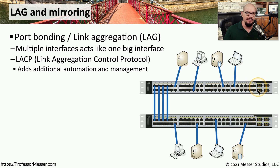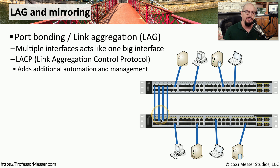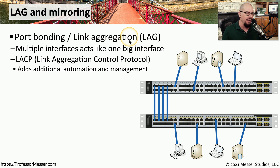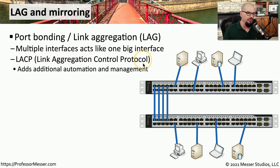Having a single link to connect switches is useful for connectivity, but occasionally you may need additional bandwidth between switches. There is a standard that allows you to put multiple connections between switches and use all of those connections as one large aggregated link. This is called port bonding or link aggregation — sometimes referred to as LAG. These multiple interfaces will act and look like one big interface to the switch, and often a control protocol called LACP, or Link Aggregation Control Protocol, is used to manage this.